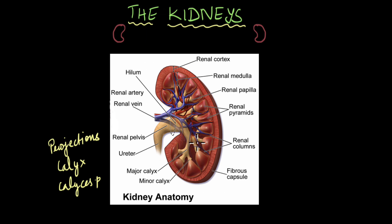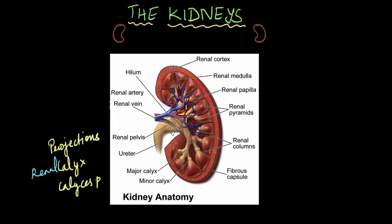The renal pelvis is not just one open huge space; rather, it splits into different tube-like structures. These tube-like structures, or projections of the renal pelvis, are known as renal calyx — which is the singular form — or renal calyces. If you look at the renal calyces, they sort of end up against the tip of these triangular structures.